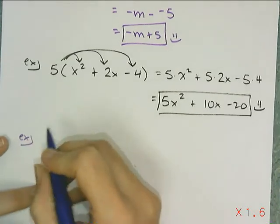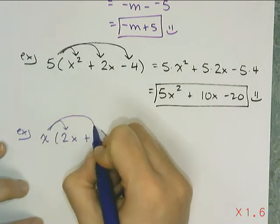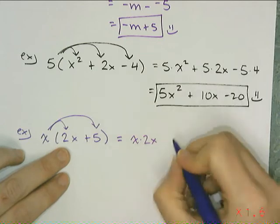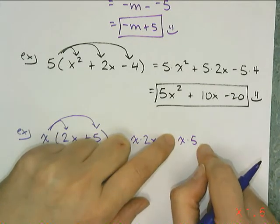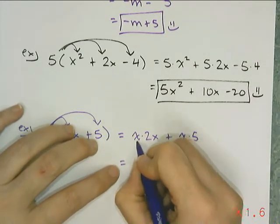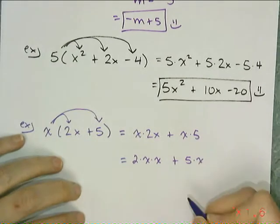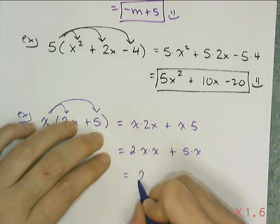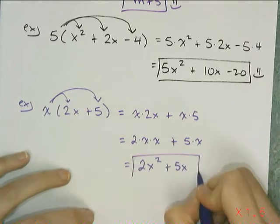Now let's talk about how to distribute a variable — it's no different. I multiply x times 2x and x times 5, but I have to be careful with how I write the answer. I use the commutative property of multiplication to put the coefficient first and the variable at the end. So x times 2x becomes 2x squared, and x times 5 becomes 5x. The result is 2x squared plus 5x.